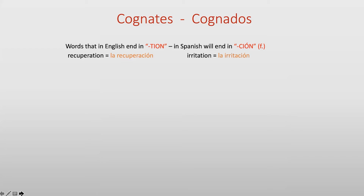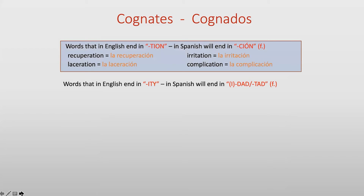Now let's look at cognates — words with similar roots in English and Spanish. Words ending in -sion in English end in -sión in Spanish and are feminine: la recuperación, la irritación, la laceración, la complicación, la inflamación, la información. Words ending in -ity in English end in -idad or -itad in Spanish, also feminine: la maternidad, la ansiedad, la sexualidad, la mortalidad, la posibilidad.